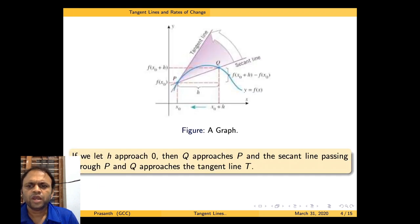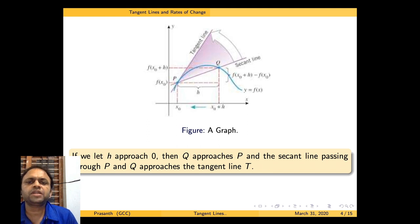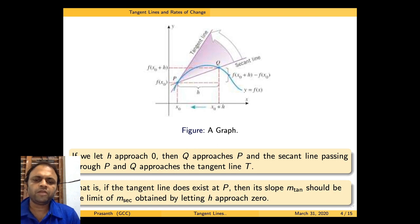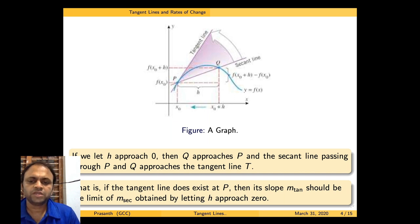As h approaches 0, Q approaches P, and the secant line passing through P and Q ultimately becomes the tangent line. If the tangent line exists at P, then its slope m_tan should be the limit of m_sec obtained by letting h approach 0. That is, m_tan equals the limit as h tends to 0 of f(a+h) minus f(a) divided by h.